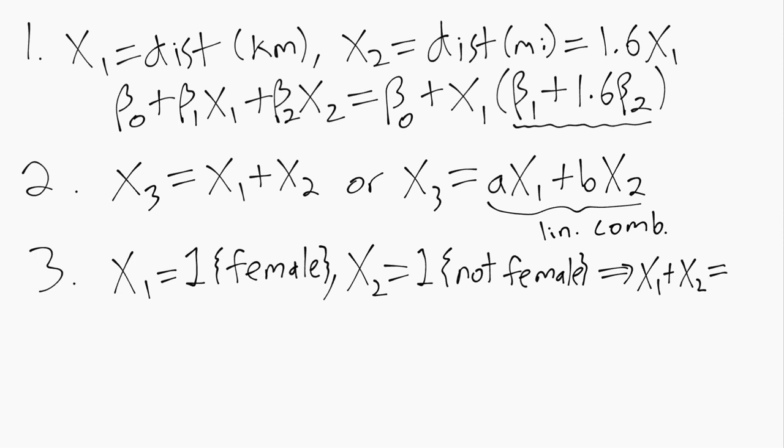So x1 plus x2 is equal to 1. And recall, even though 1 does not look like a regressor, it's the secret regressor that we use for the intercept.